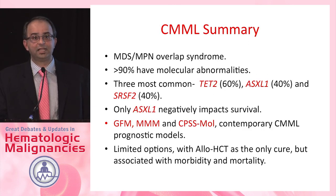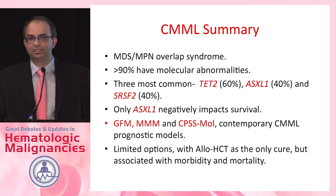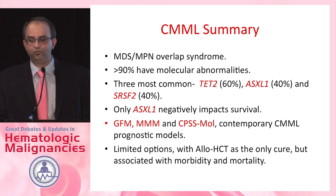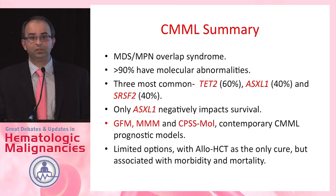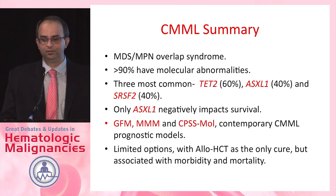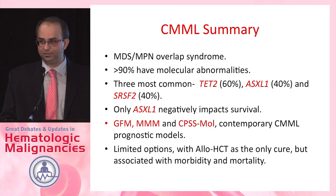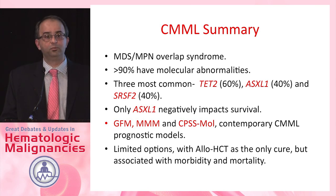In summary, CMML is clearly an overlap syndrome. More than 90% have molecular abnormalities; TET2, ASXL1, and SRSF2 are the three most common. Only ASXL1 has consistently been shown to negatively impact survival. The GFM model, the Mayo Molecular Model, and the CPSS are contemporary molecular prognostic models. Treatment options are currently limited, with significant morbidity and mortality associated with stem cell transplant.